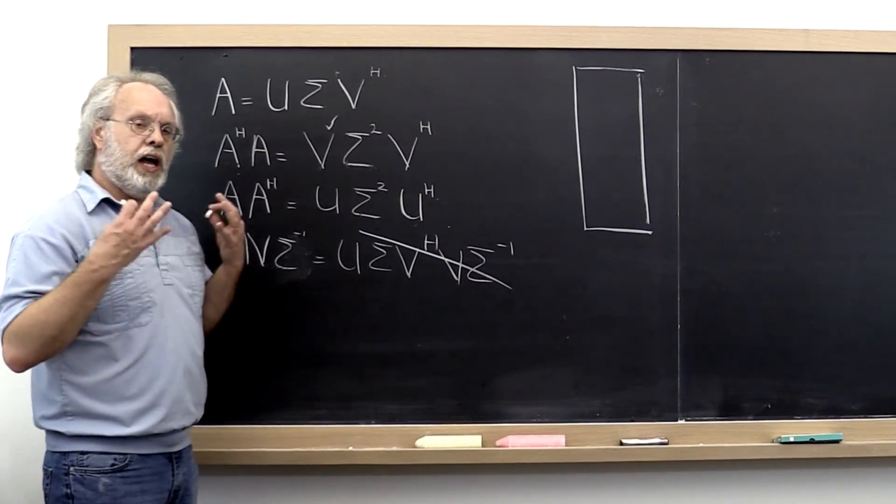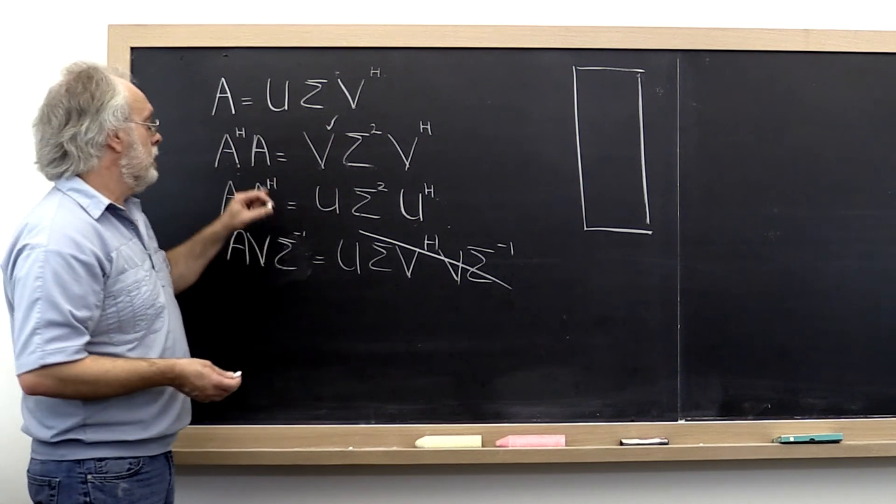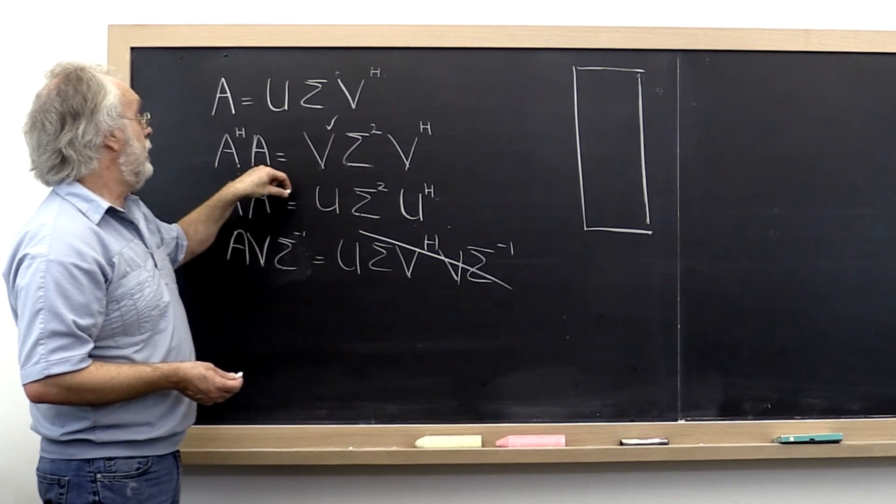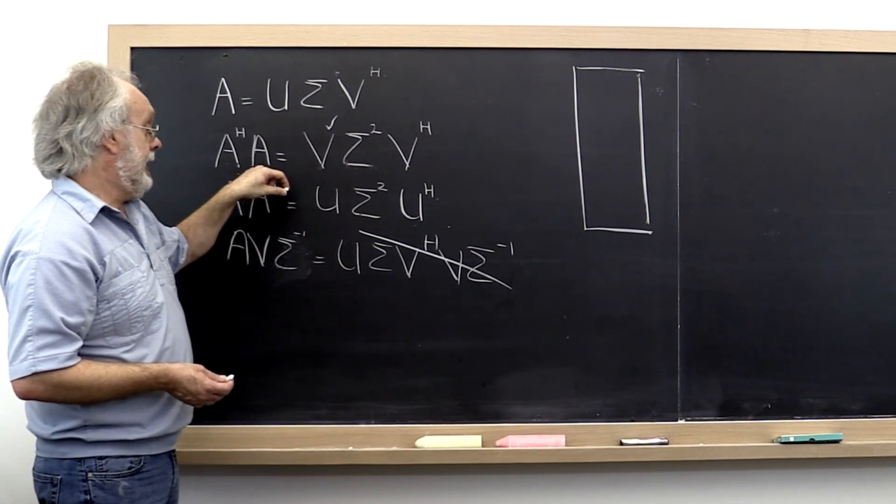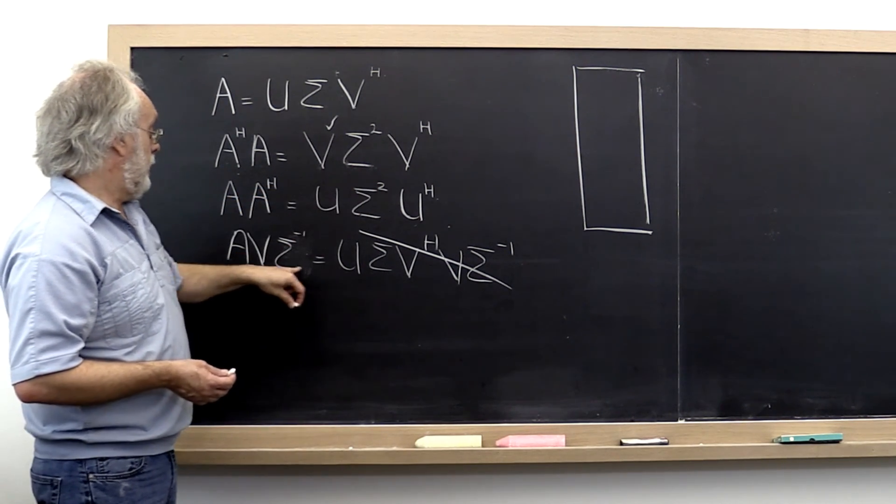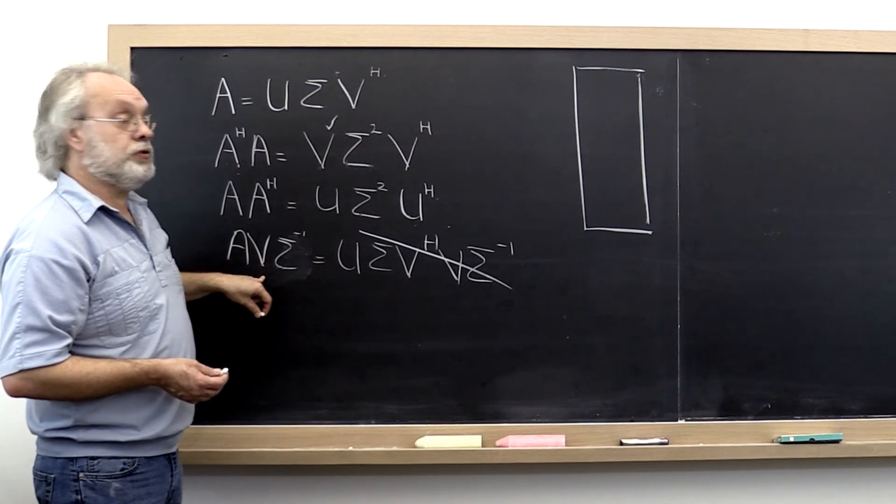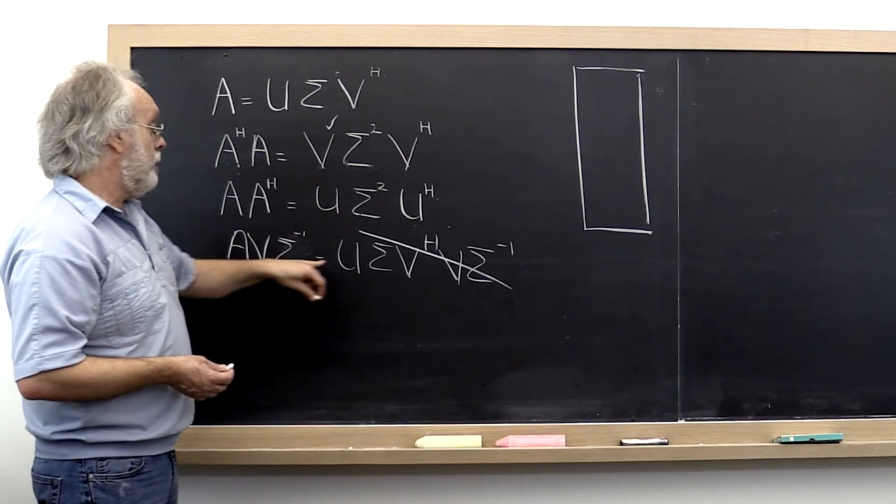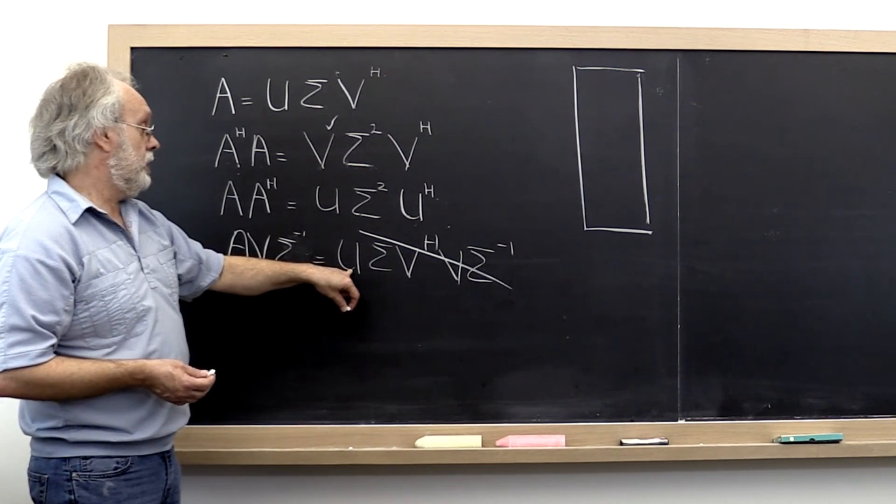So here we have a method: compute A^H*A, then compute its spectral decomposition, and use those results to obtain our unitary matrix U.